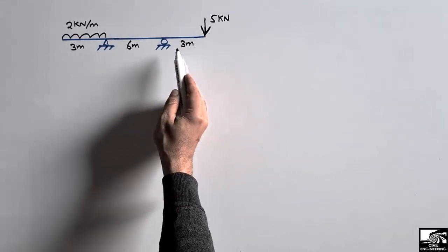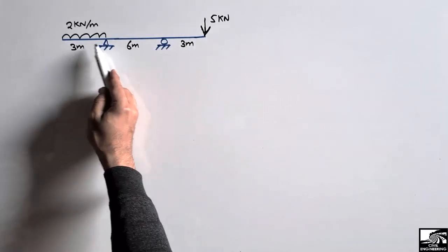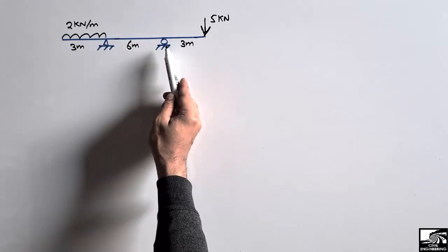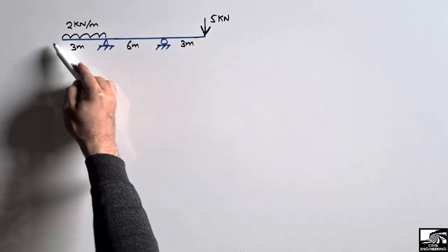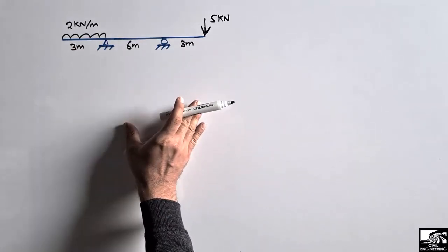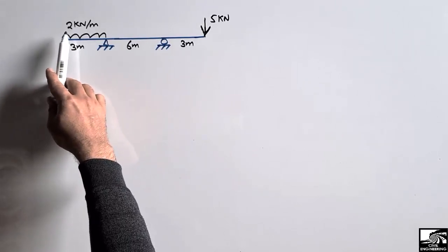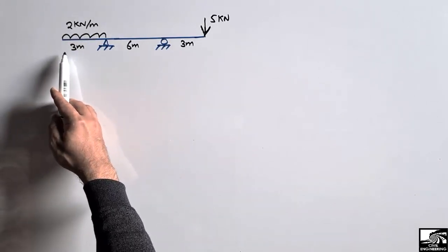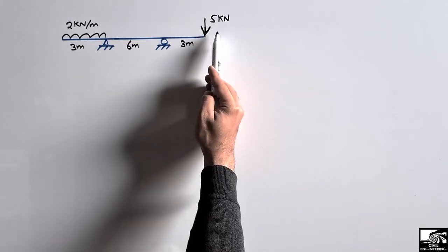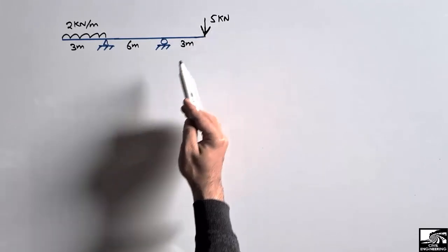This is an overhanging beam because we can see here two portions of the beam are overhanging from the simply supported case. So this is a simply supported beam but this portion and this portion are overhanging, so we call this type of beam an overhanging beam. This portion of the beam is loaded with a uniformly distributed load of 2 kN per meter over a distance of 3 meters, and there is a point load of 5 kN acting at the other end of the beam.